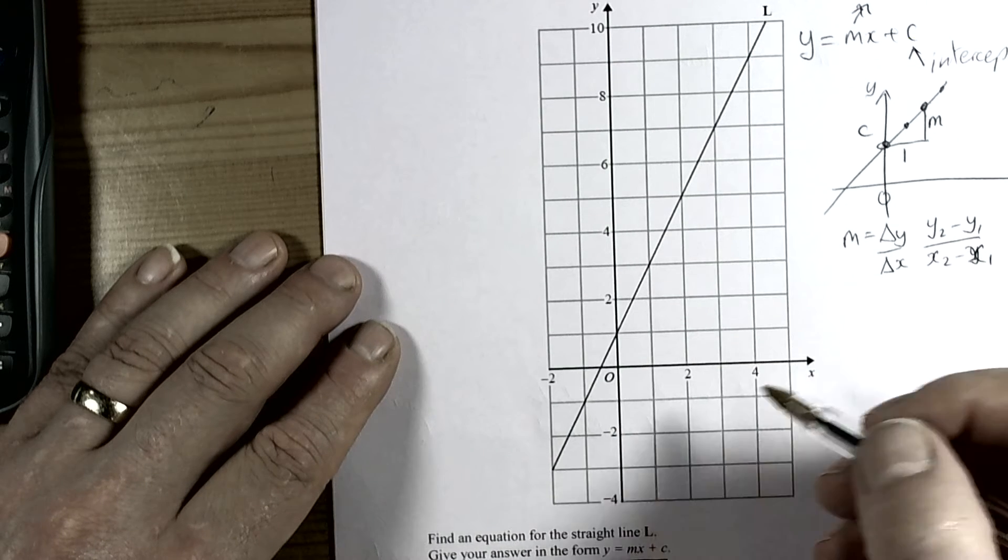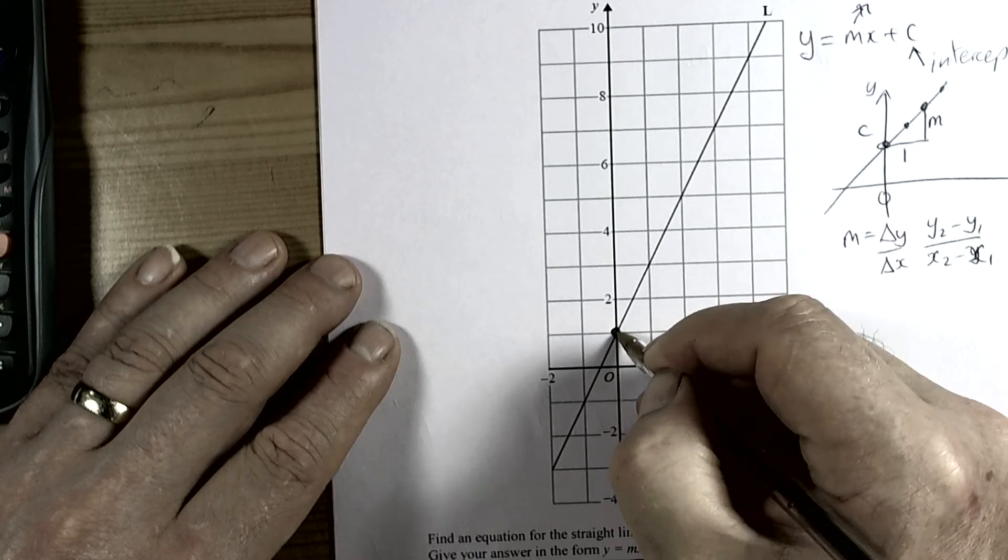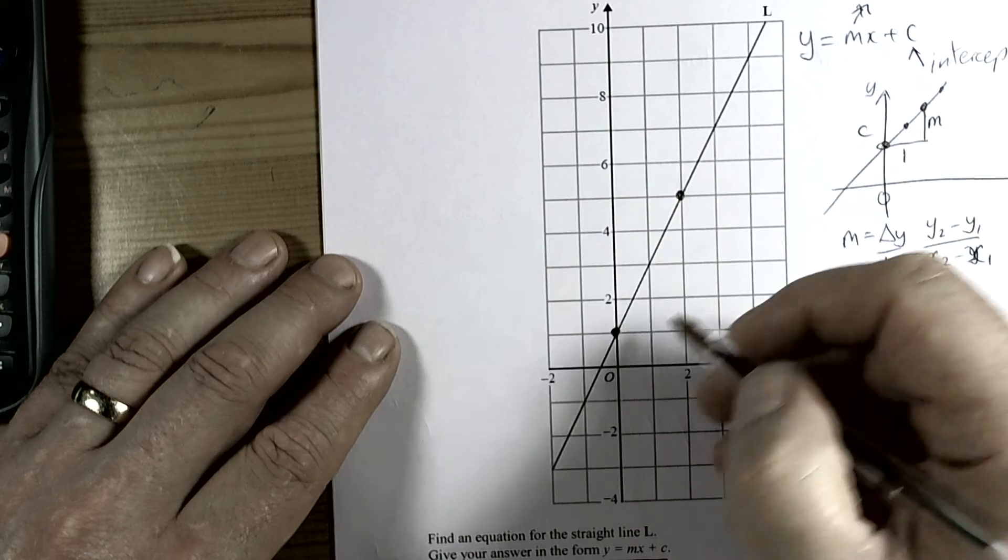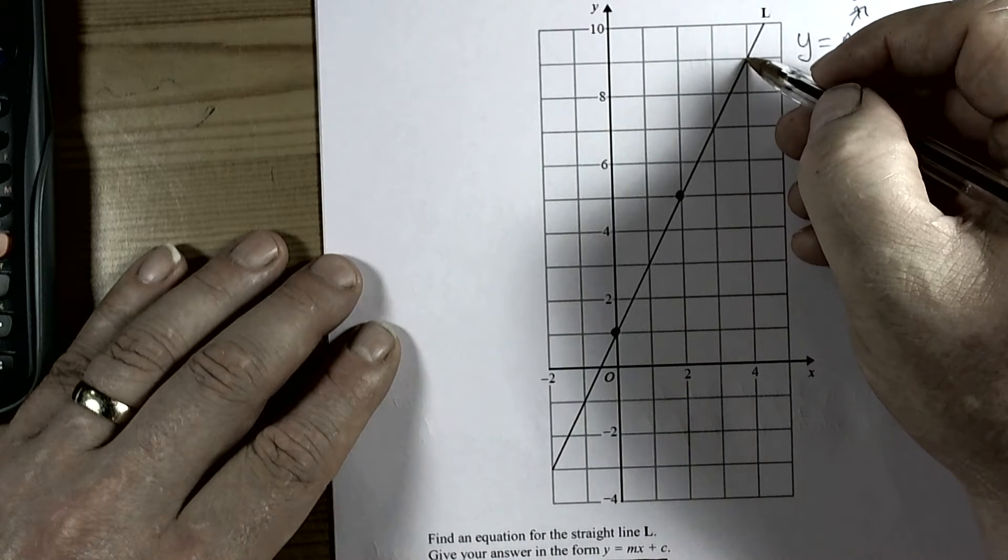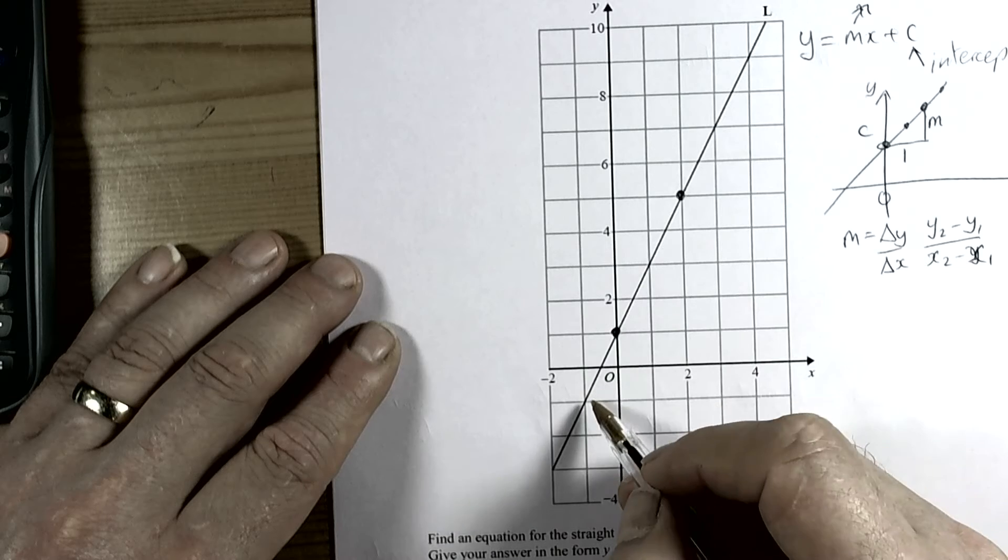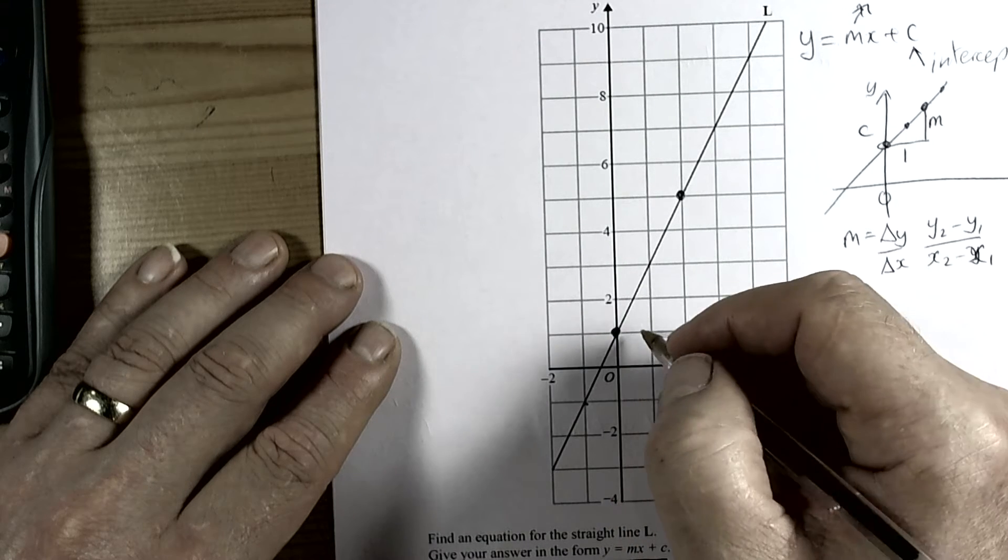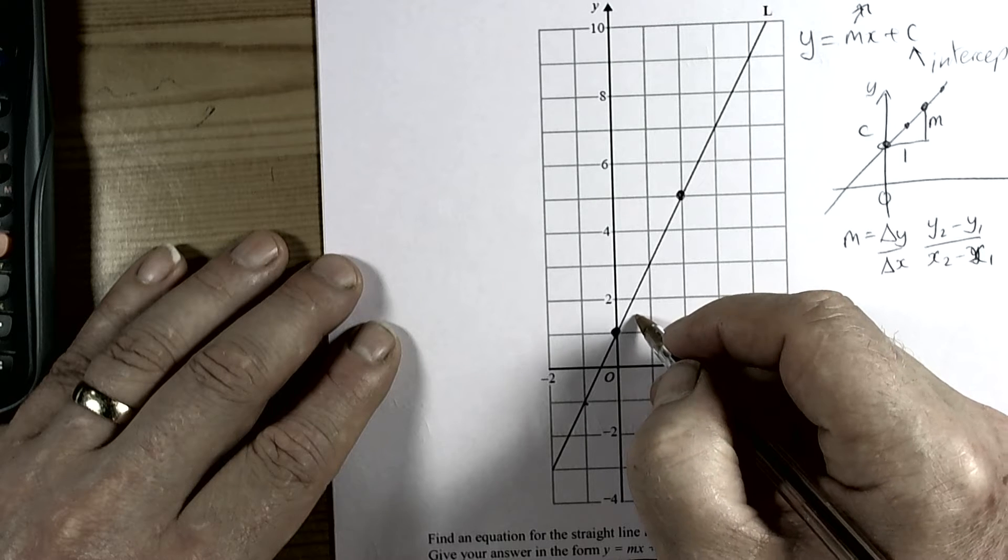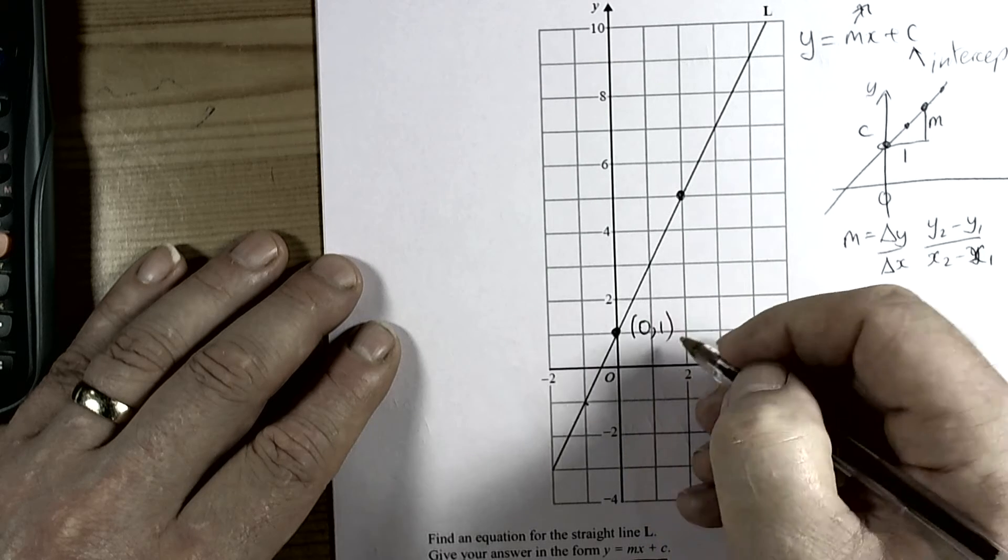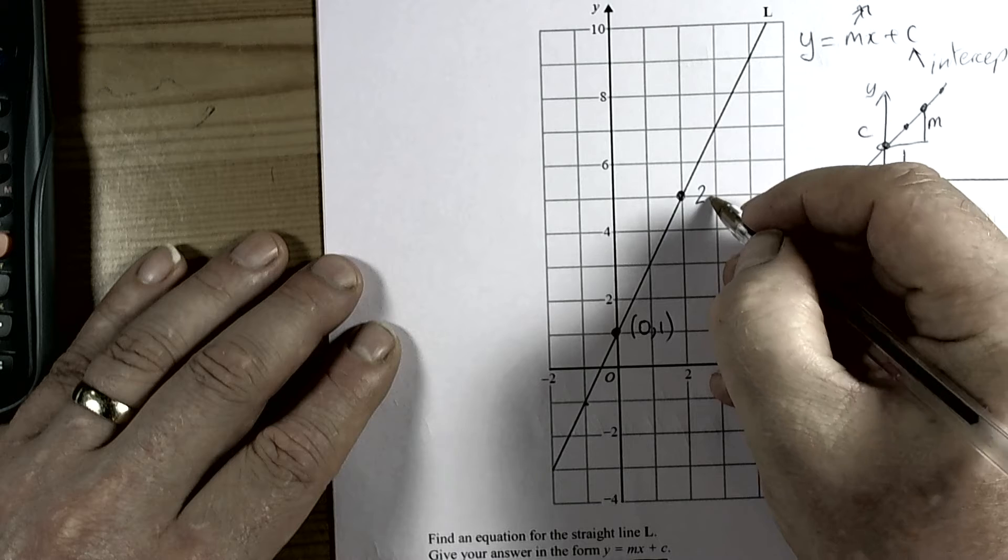For this line, I'm going to choose these two coordinates here. I could have chosen this one up here or this one here—I'm just choosing coordinates that I can read off nicely. It really didn't matter; I've just got to choose two of them. This coordinate is (0, 1) and this coordinate is (2, 5).